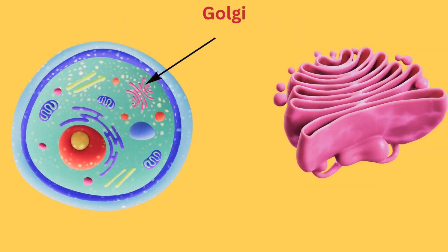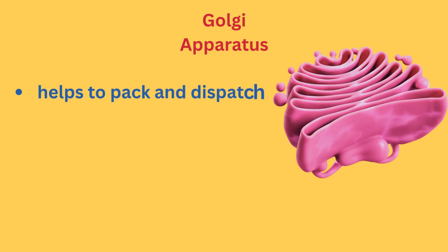This is the Golgi apparatus. They help to pack and dispatch proteins and lipids to other parts of the cell. They are like the post office of the cell.